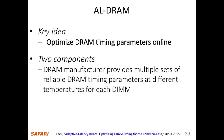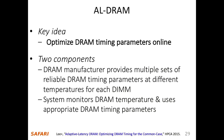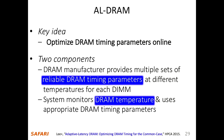For implementation you need two components: DRAM manufacturers provide multiple sets of reliable timing parameters at different temperatures - let's say at 55°C and 85°C - and the system monitors DRAM temperature and uses the appropriate timing parameters. A temperature monitor already exists in existing DRAM modules. The harder part is providing the reliable timing parameters, which requires additional testing beyond what manufacturers do today for 85°C operation.